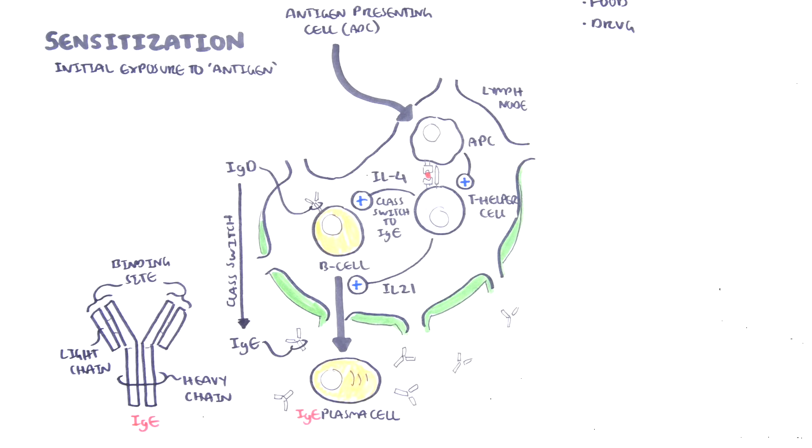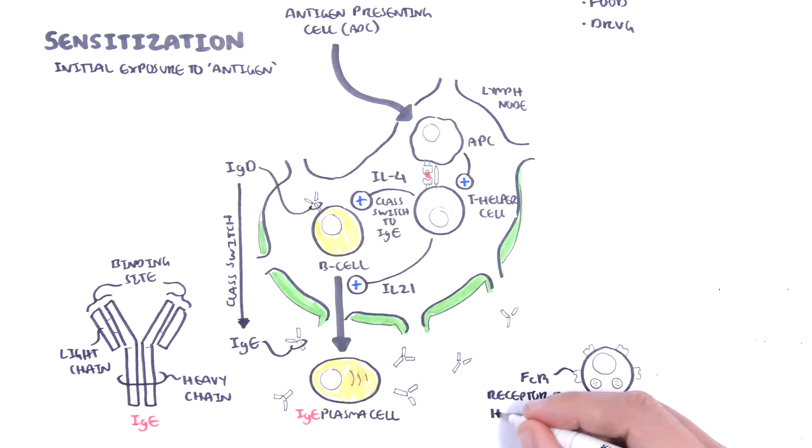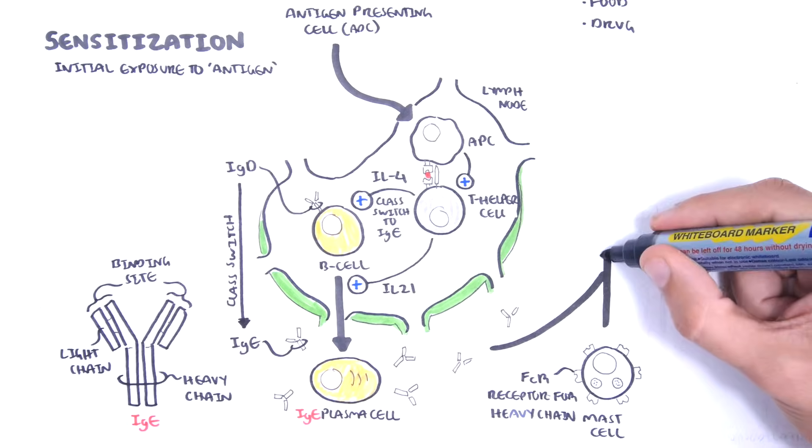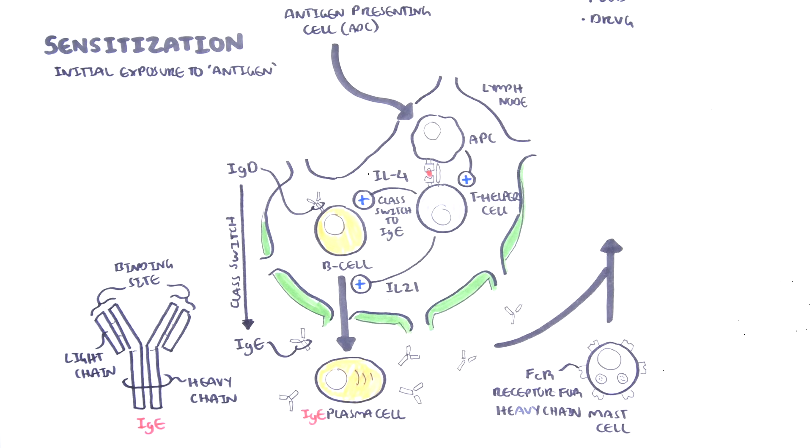The other major player in the sensitization of the immune cells towards the particular allergen are the mast cells, which are granulocytes containing mediators called histamine. On the surface of the mast cells are Fc receptors, which are receptors for the heavy chain of IgE.